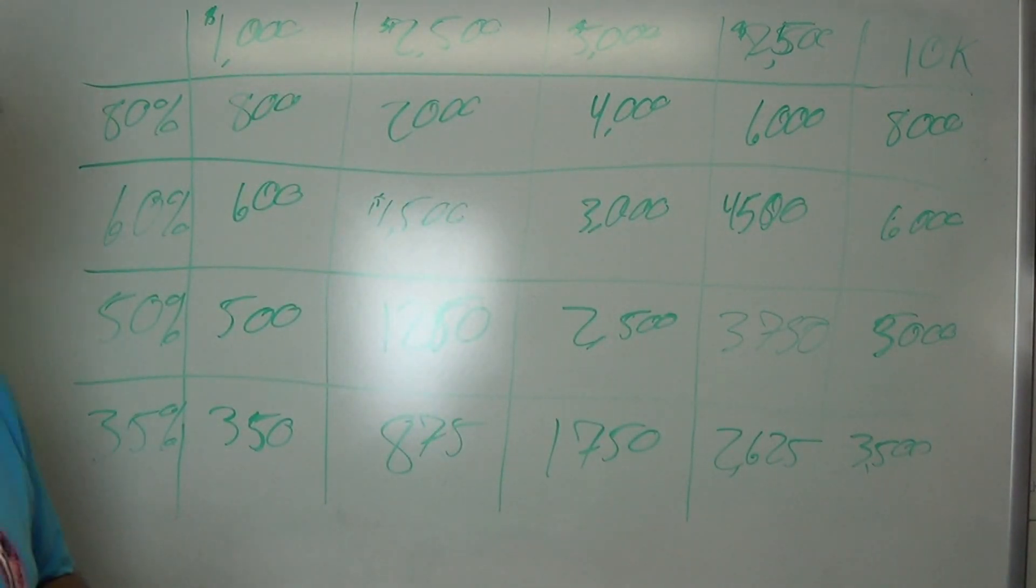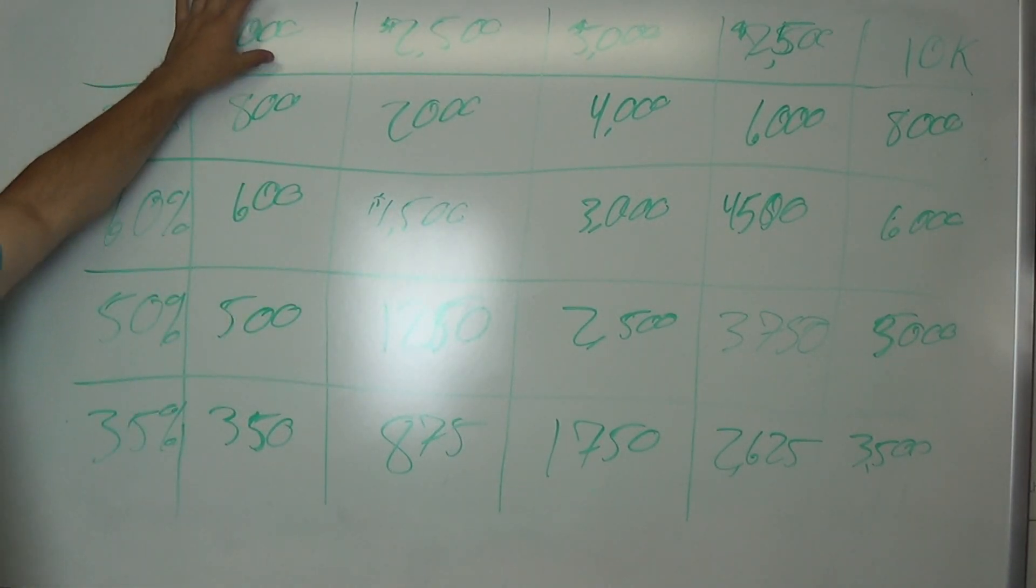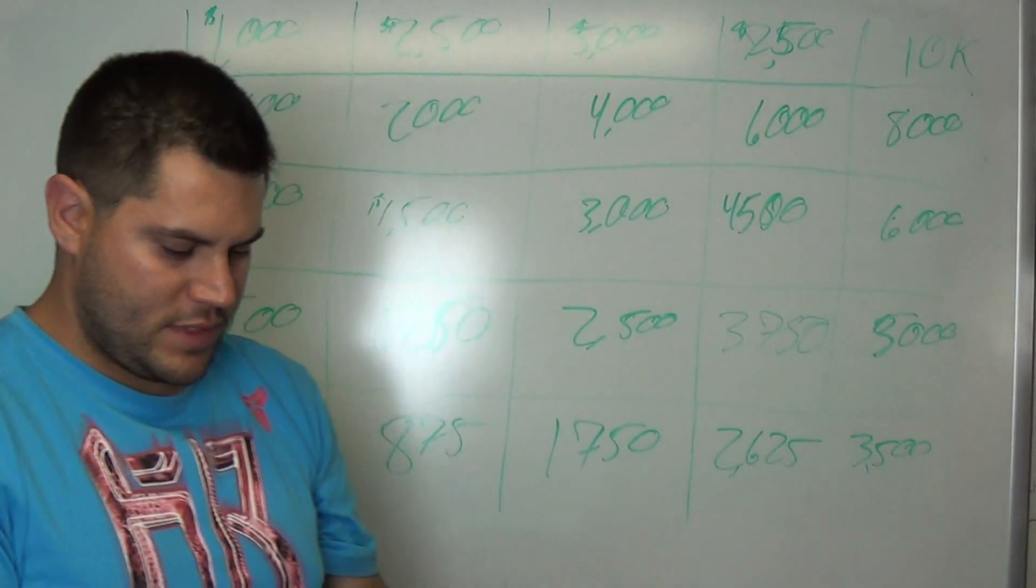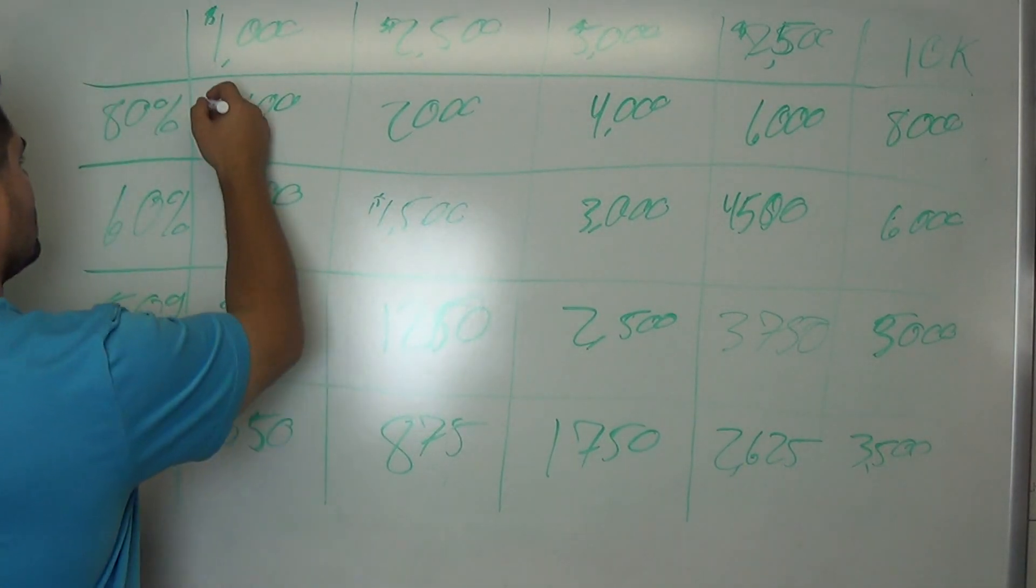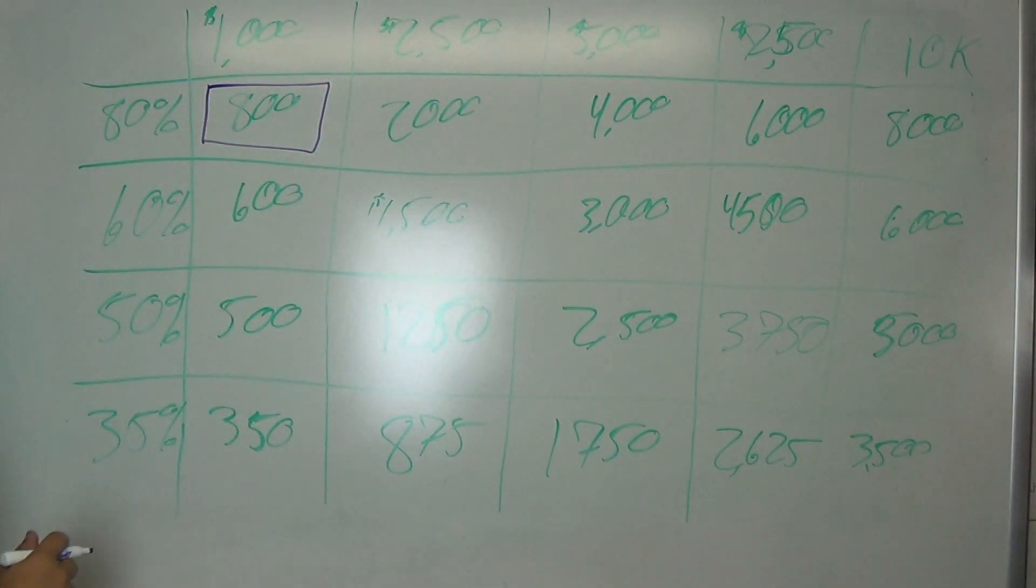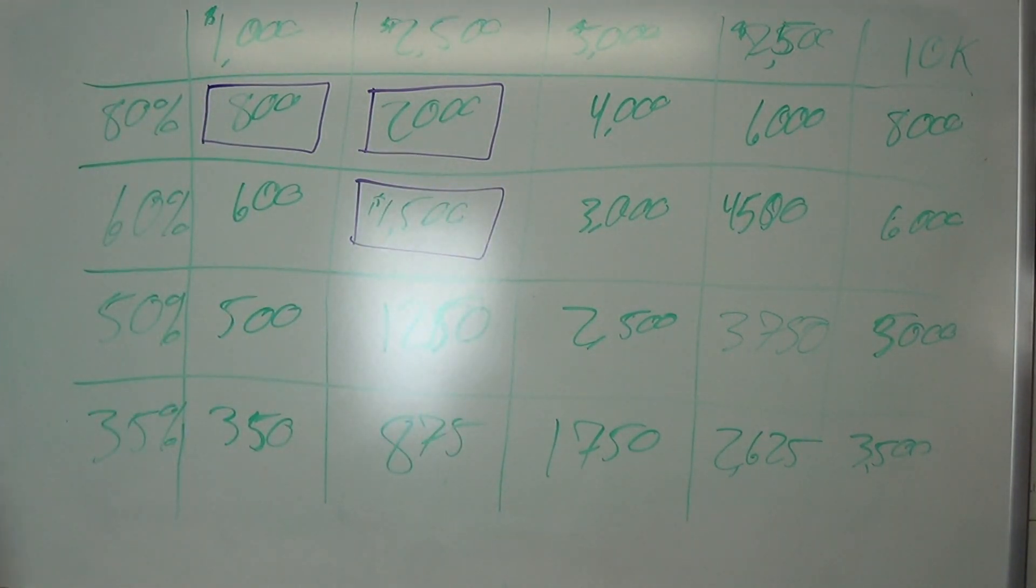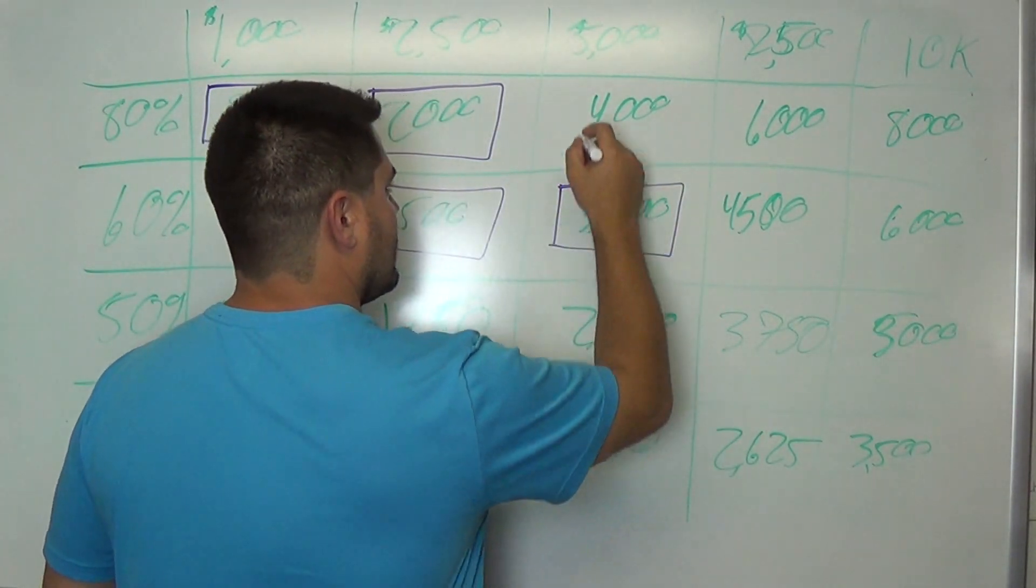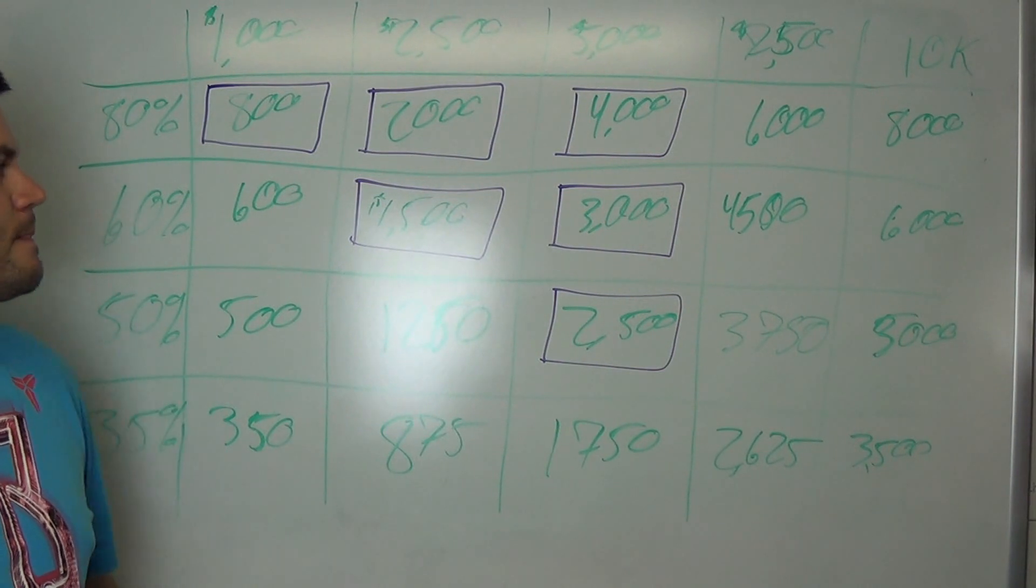So now that all the numbers are up there, what I want to explain to you is most people that start out, start out with spending $1,000. And what is realistic? If you only got $1,000, this is realistic. If you're spending $2,500, this and this are easily realistic. So you're spending $5,000. All those are easily realistic.